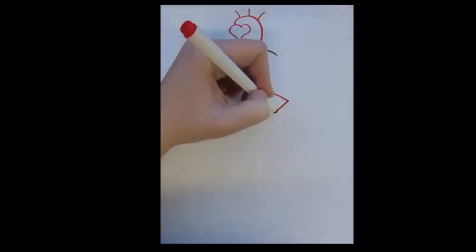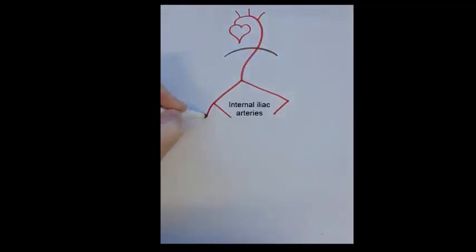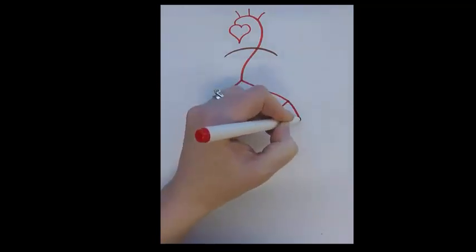When the aorta divides, the resulting branches are known as left and right common iliac arteries. The word common tells us that each artery will divide again. Those branches are then known as internal iliac arteries and external iliac arteries.